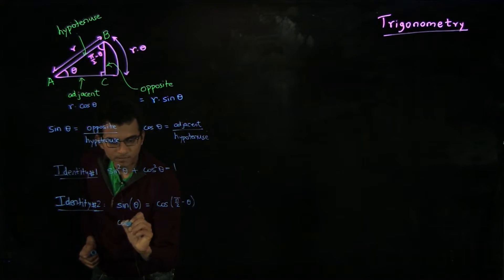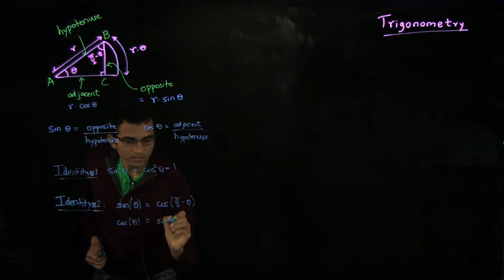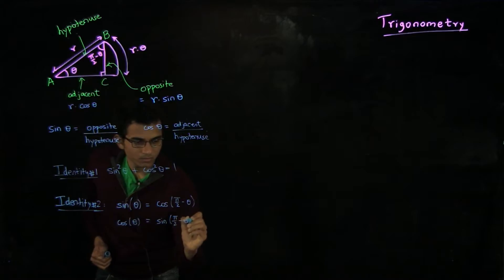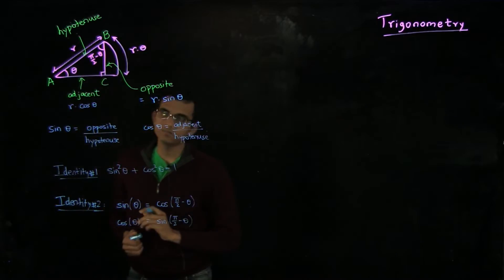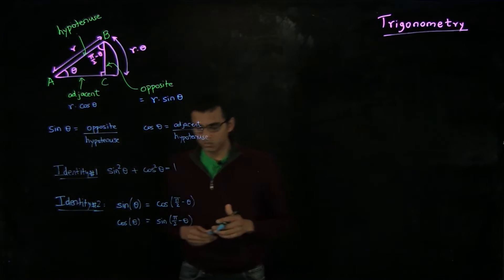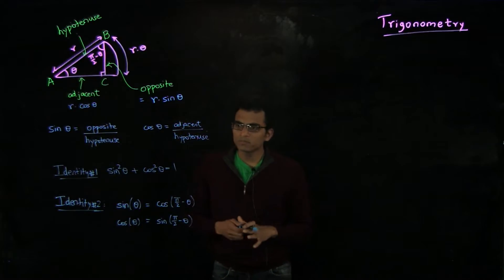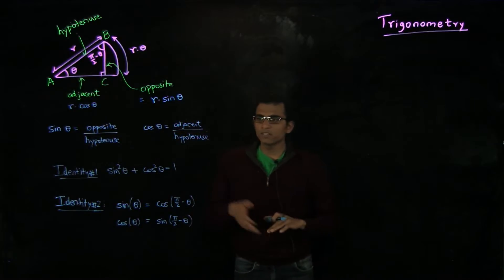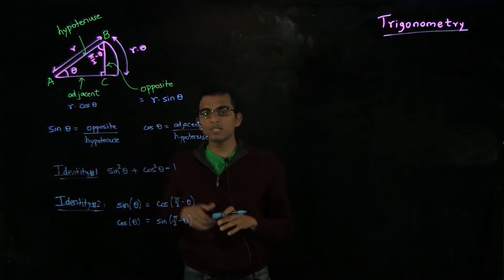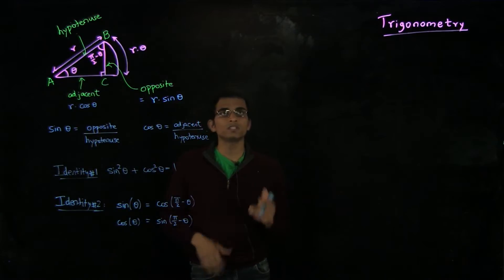And similarly, cos of theta is sin of Pi over 2 minus theta. So with these definitions, let us try to get a better feel for these quantities and compute them for some specific angles.